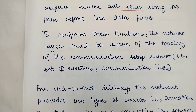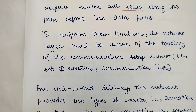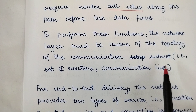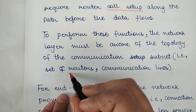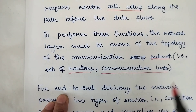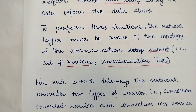To perform these functions, the network layer must be aware of the topology. In order to provide proper call setup, forwarding, and end-to-end delivery, the network layer must know the topology of the communication subnet. A subnet is basically made up of routers and communication lines, and the network layer must be completely aware of that topology.